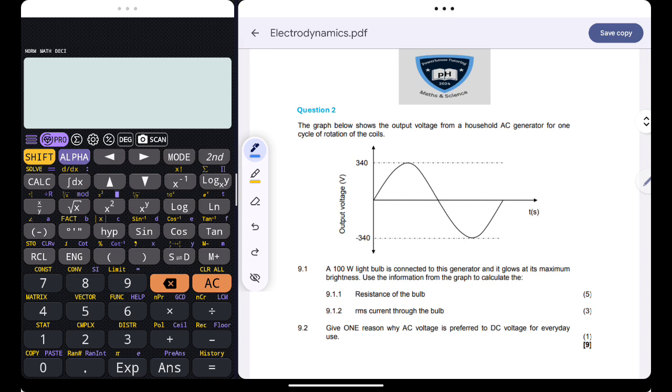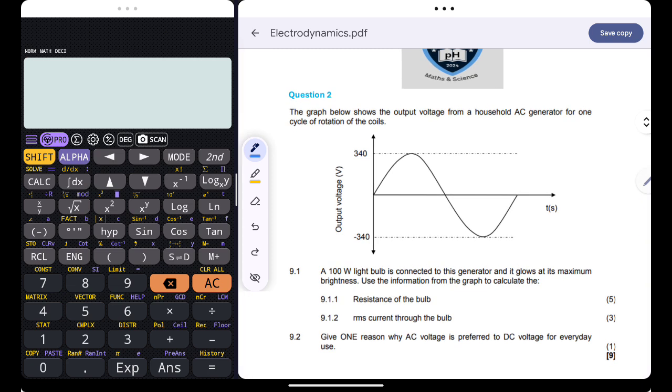The graph below shows the output voltage from a household AC generator for one cycle of rotation of the coils. We are given a graph for output voltage, so this over here will represent my maximum voltage. I now know that my V max, my maximum voltage, is just equal to 340 volts. It's the peak voltage.